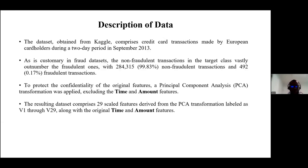The data I used came from Kaggle and comprises credit card transactions made by European cardholders during a two-day period in September 2013. The data has a class imbalance for the target class, where the number of non-fraudulent transactions vastly outnumbered fraudulent transactions. Specifically, non-fraudulent transactions amounted to 99.3% of the total data, whilst fraudulent transactions amounted to only 0.17% of total transactions.